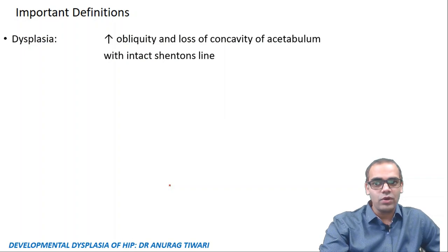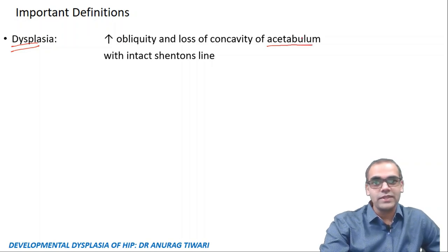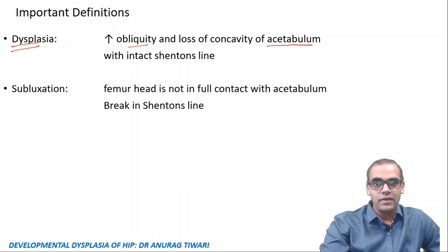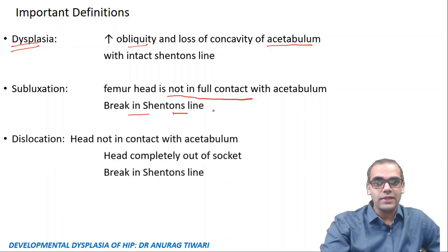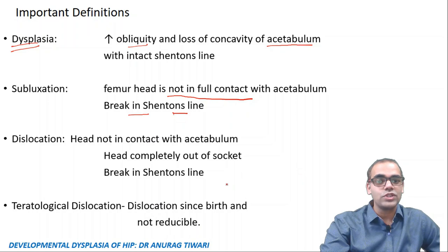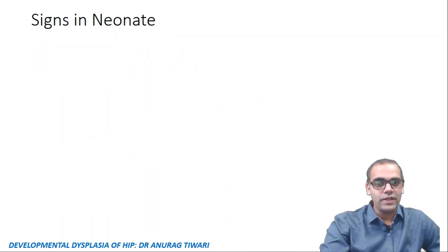Important definitions in DDH: Dysplasia is increased obliquity and loss of concavity of the acetabulum with intact Shenton's line. In subluxation, the femoral head has partial contact with the acetabulum with a break in Shenton's line. In dislocation, the head is completely out of the socket with a break in Shenton's line. Teratological dislocation is dislocation since birth that is irreducible, most likely seen in certain syndromes and myelomeningocele.